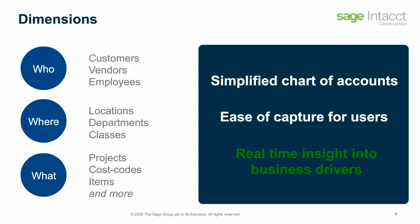That actually tees up a question for Dennis later about specifically how we can leverage these dimensions in construction. As technology evolves, so does the role of the CFO — or in construction we also call them construction financial managers. Sage has done a lot of work on the evolution of the CFO from 1.0 to 2.0 to 3.0. What is Sage Intact doing to support this evolution?